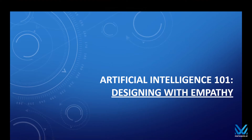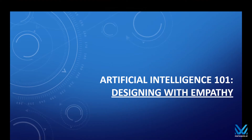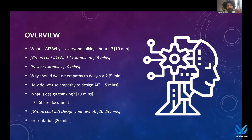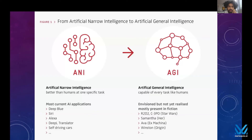So the overview: first we'll talk about what AI is more generally and go through a few examples. Then I'll talk about why we should design AI with empathy and provide a framework for how to do that, and talk about some examples that I've done within my own work.